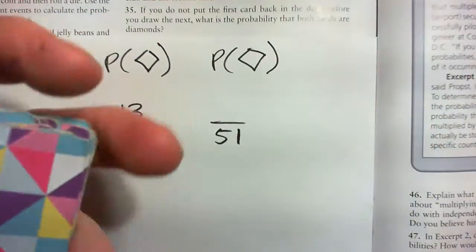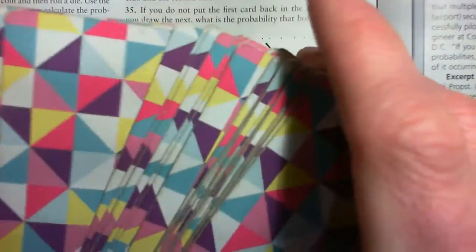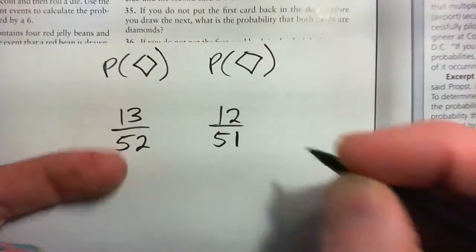We started with 13, but we pulled one out, remember? And we threw it away. But how many is left in here now? Not 13, 12. See that?